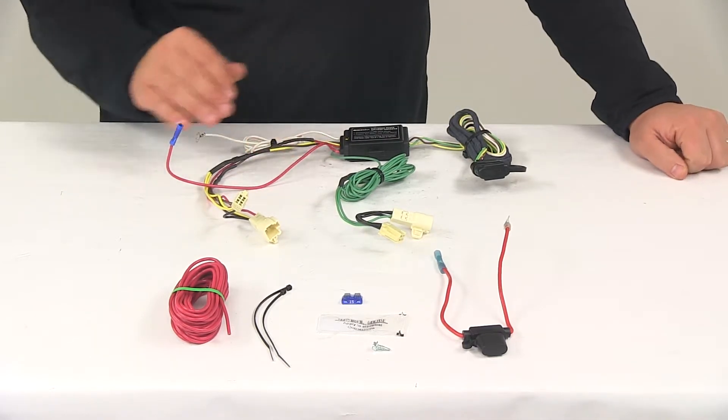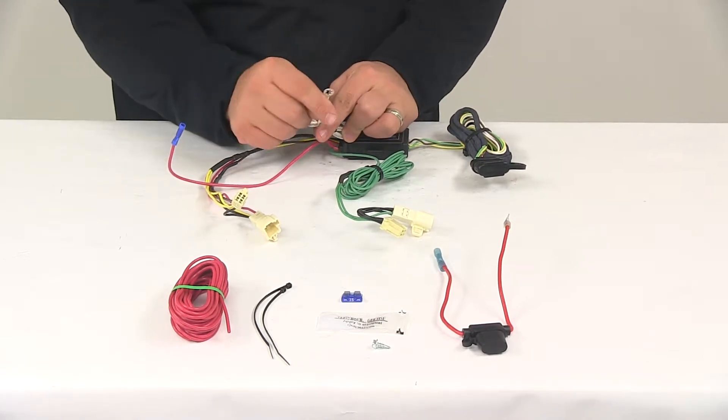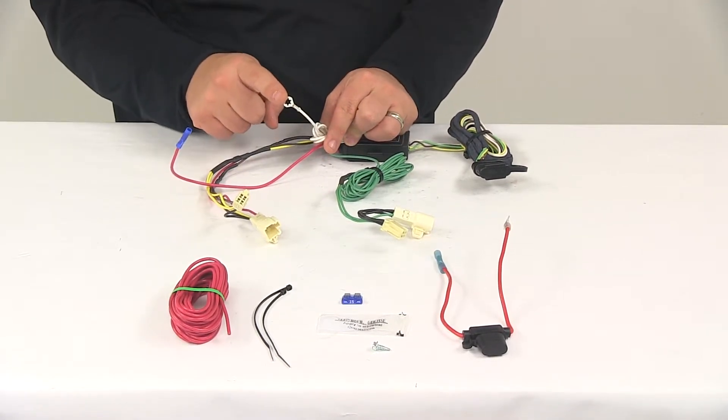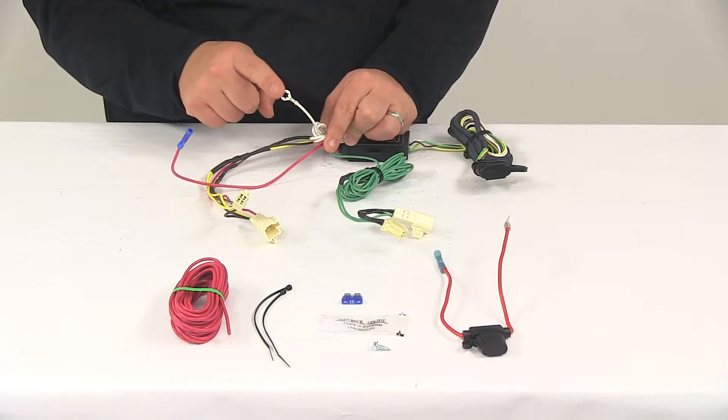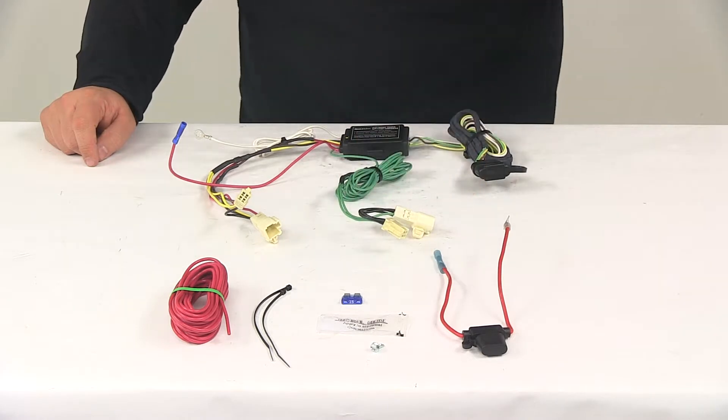Once you have those connected, you'll need to make a ground connection. That's your white wire with the ring terminal already attached to it. You want to get that grounded to a nice, clean, suitable grounding location. And you can use the included self-tapping grounding screw.